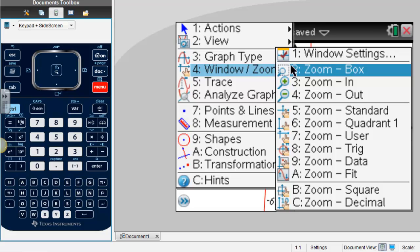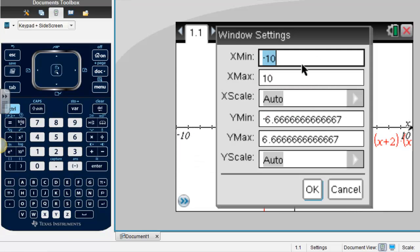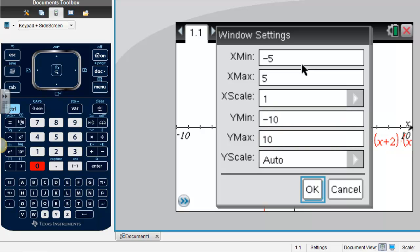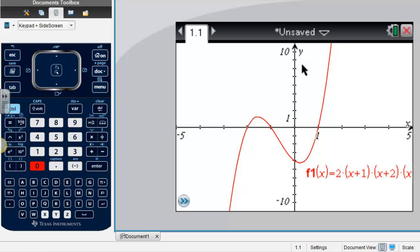So to change the window, I press menu, window, window settings, I'm just going to go from negative five to five by ones, I'm going to go negative ten to ten, and there's my graph.